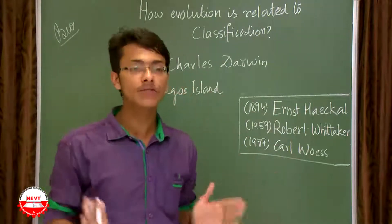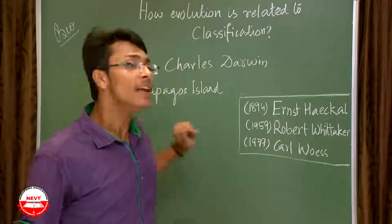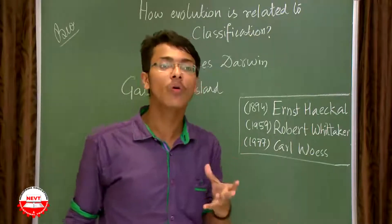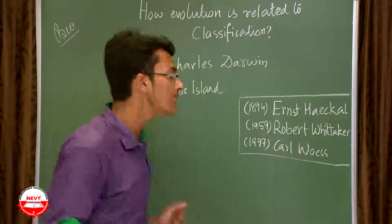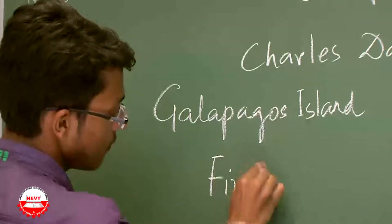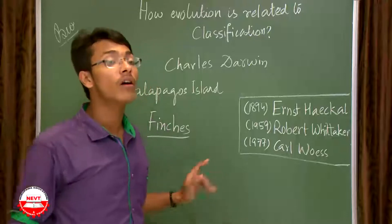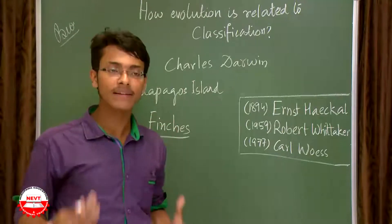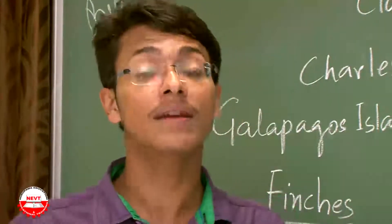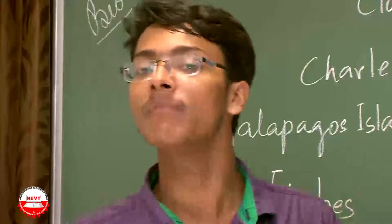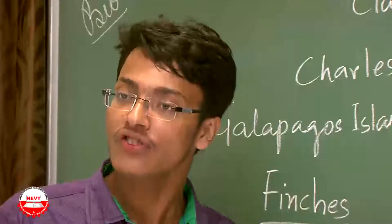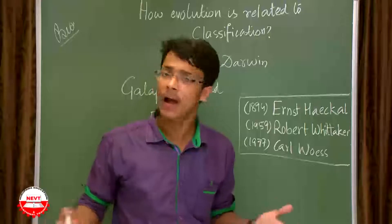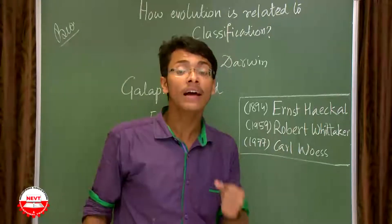He reached near an island called Galapagos Island. When Darwin reached Galapagos Island, he observed a certain variety of birds — a species called finches. Finches are very similar to sparrows in their structure. The most surprising fact for Darwin was that these finches had a great variety, even within that same small island.